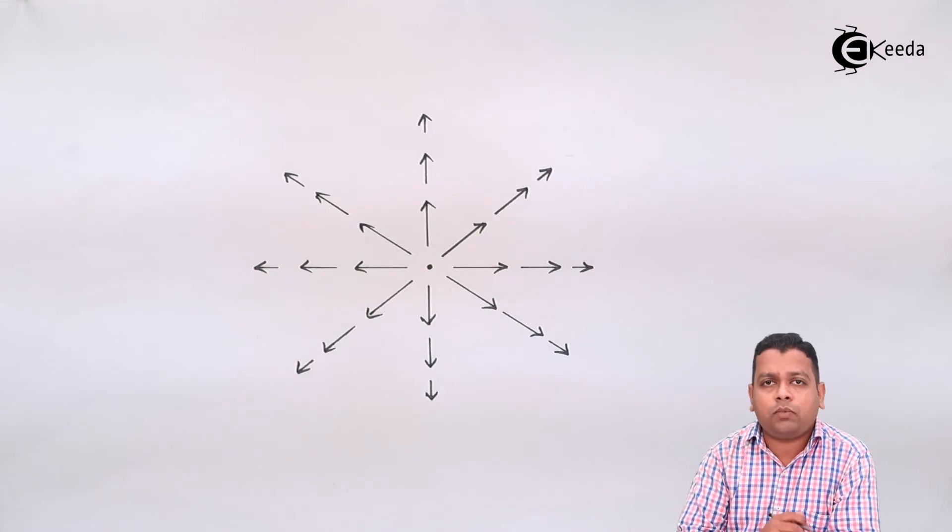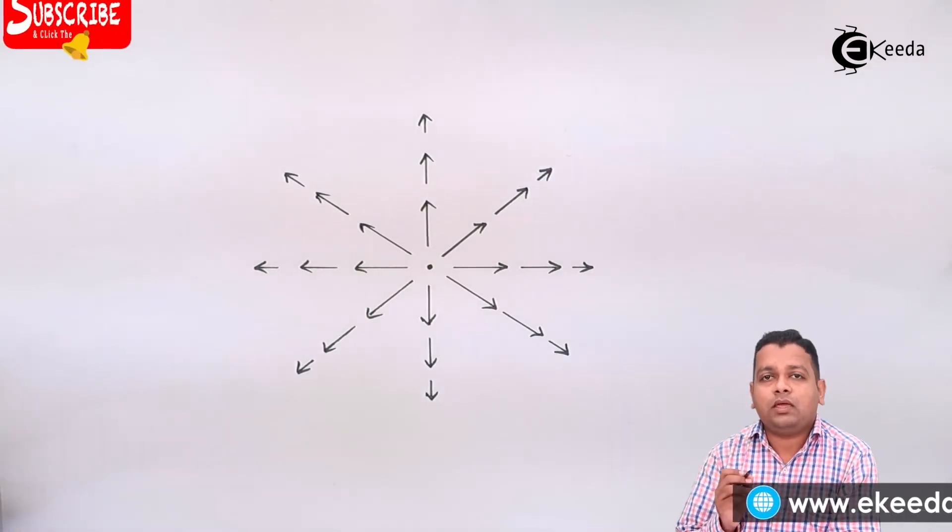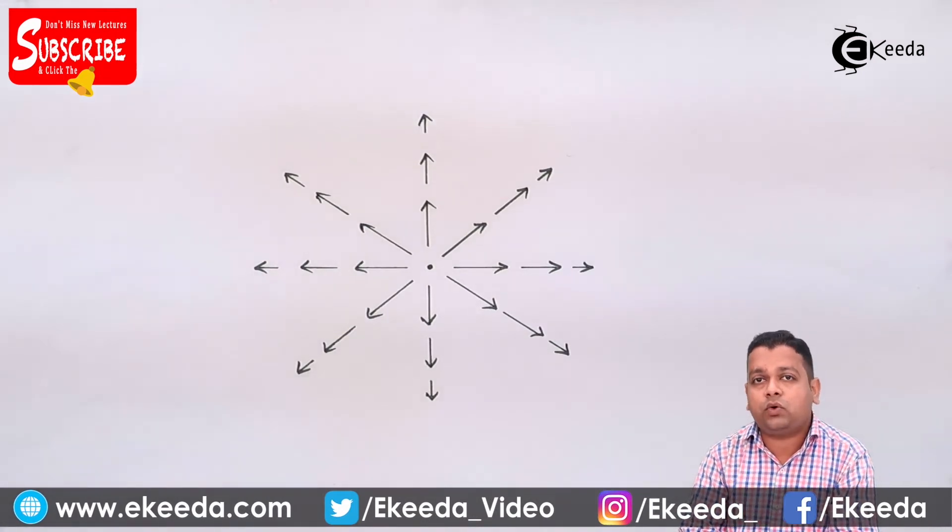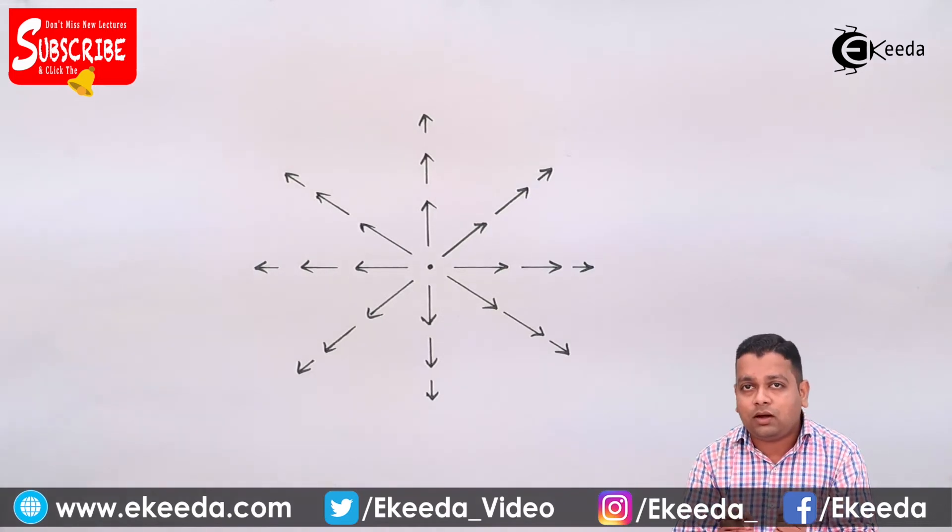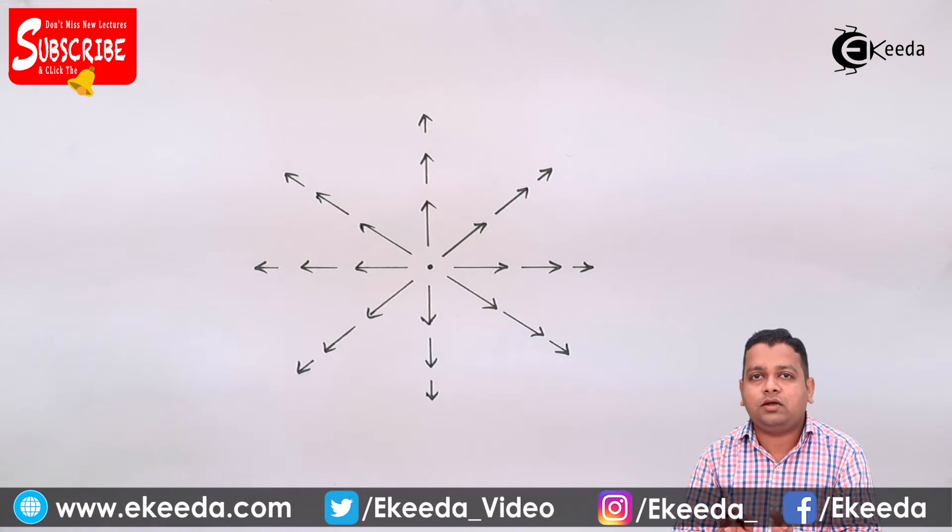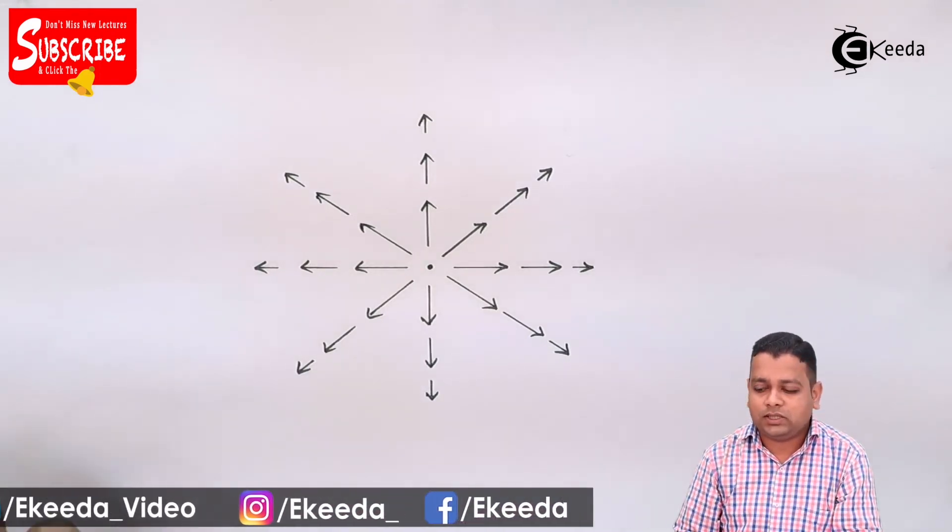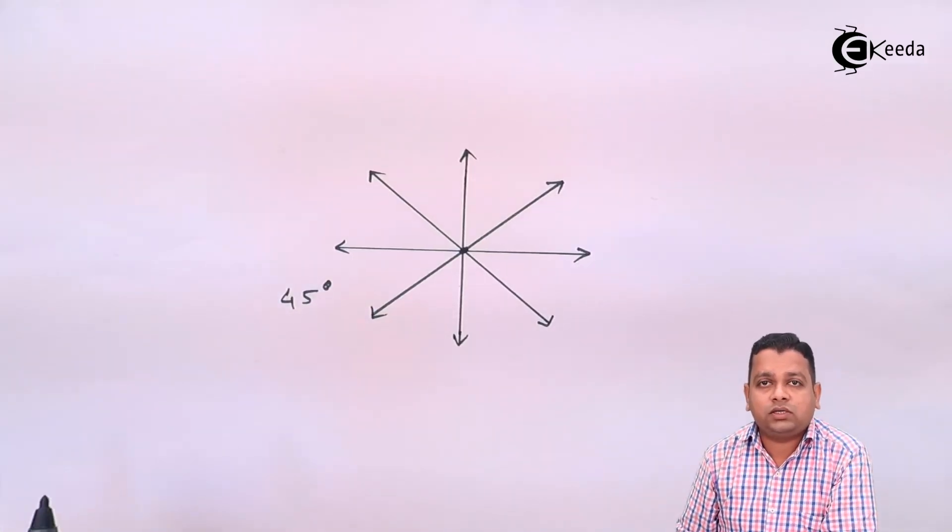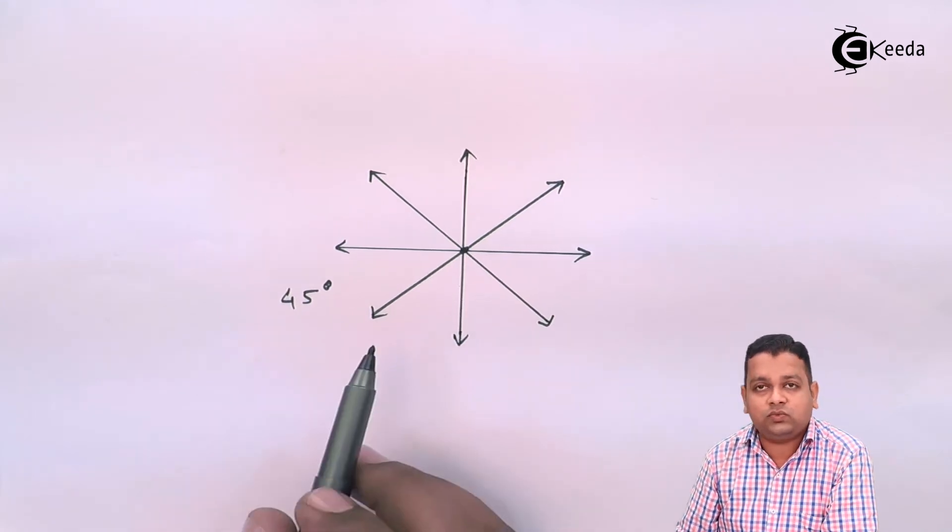But it creates a lot of confusion. Because as we go near to the source charge, that time the electric field is quite stronger. And in that much of space, drawing the thicker lines or drawing the longer lines creates confusion and difficulty in drawing the sketches. Hence, the next attempt is this one. So the next attempt to draw the sketches and the streamlines is this one.